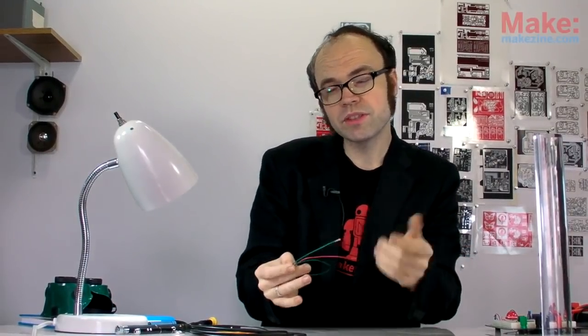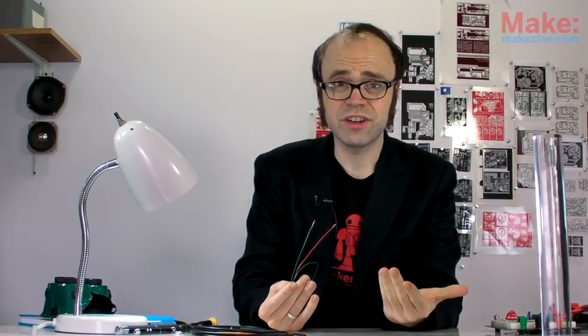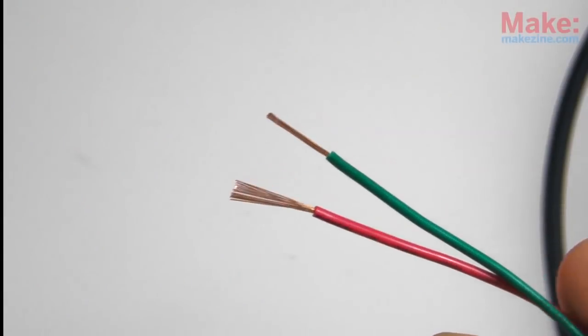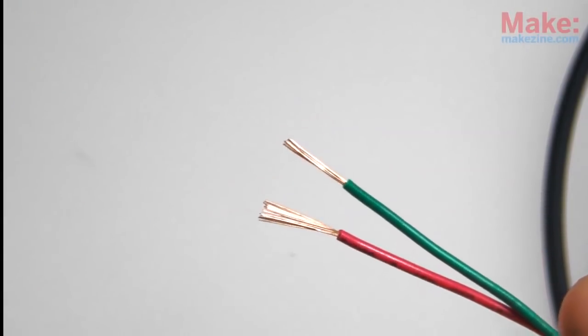As you probably already know, the most common way to transmit a signal in electronics is with electricity over a metal conductor. But that's not the only way. A signal can also be transmitted optically with the help of a little extra hardware. Watch.